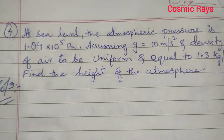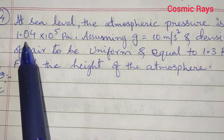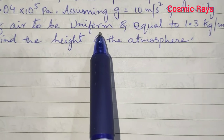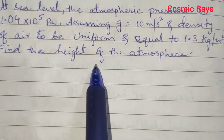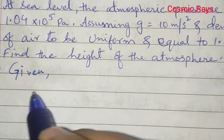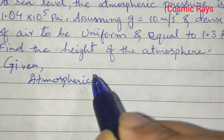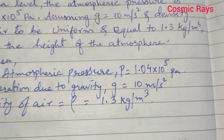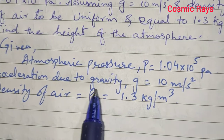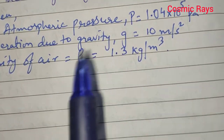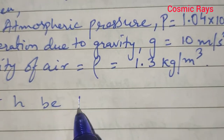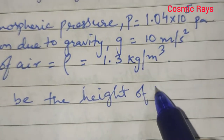Now we go to question number 4, which says at sea level the atmospheric pressure is 1.04 × 10⁵ Pascal. Assuming g to be 10 m/s² and density of air to be uniform and equal to 1.3 kg/m³, find the height of the atmosphere. We write the given values and let H be the height of the atmosphere.